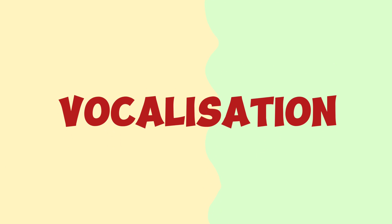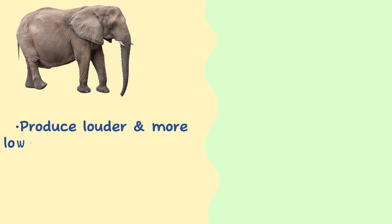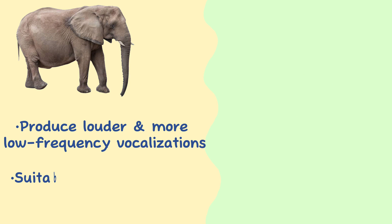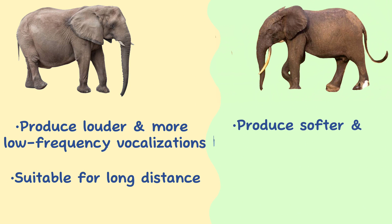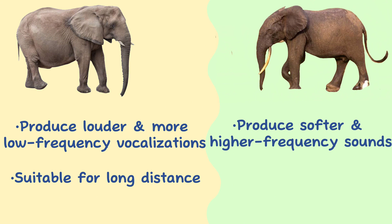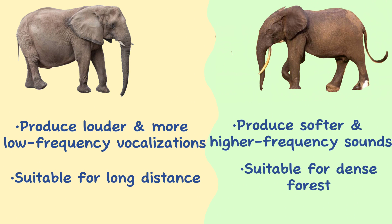Vocalization. African savannah elephants are known to produce louder and more low-frequency vocalizations, which can carry over long distances in open landscapes. The vocalizations of African forest elephants are often softer and may include higher-frequency sounds, suitable for communication within the denser confines of the forest.